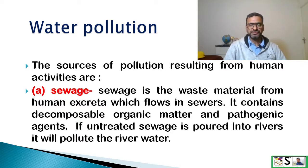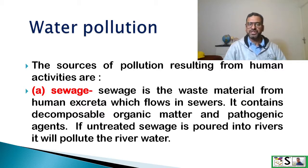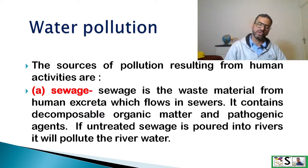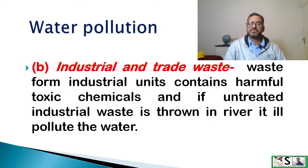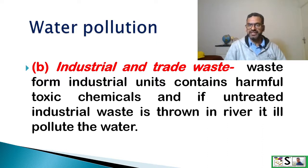Number one: sewage. Sewage is the waste material from human excreta which flows in the sewage system. It contains decomposable organic matter and pathogenic agents. If untreated sewage is poured into the river, it will pollute the river water. Second is industrial and trade waste. The waste from industrial units contains harmful toxic chemicals, and if untreated industrial waste is thrown into the river, it will pollute the water.